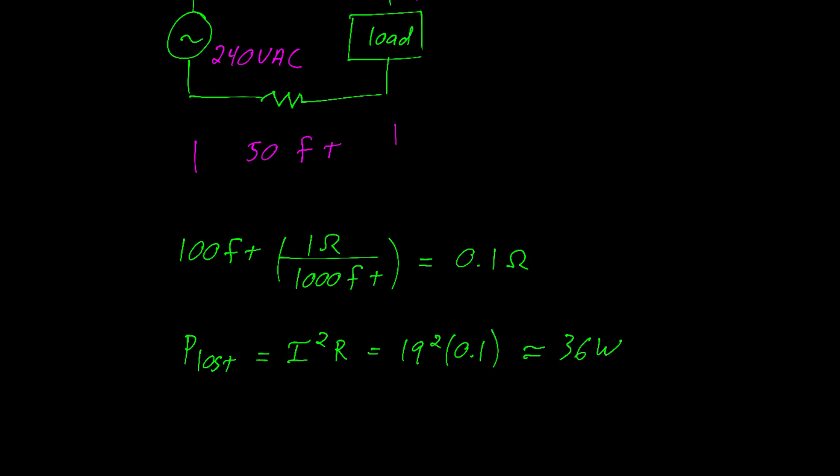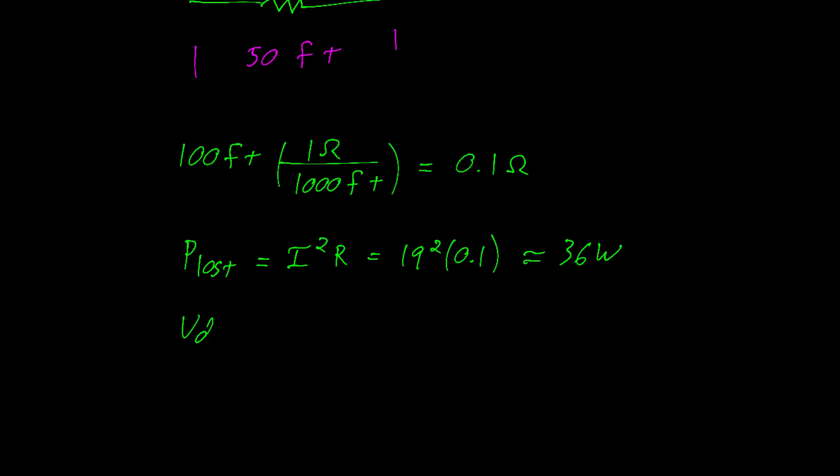We can also calculate the voltage drop across the wire using current times resistance, which is 19 amps times that 0.1 ohms, which gives us about 1.9 volts.